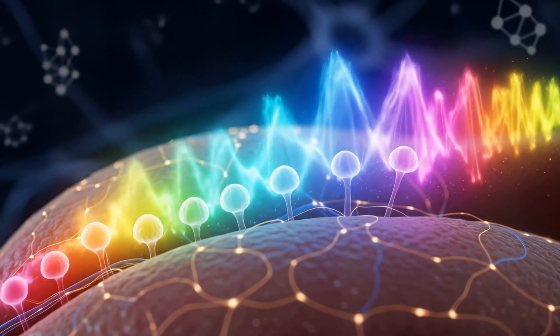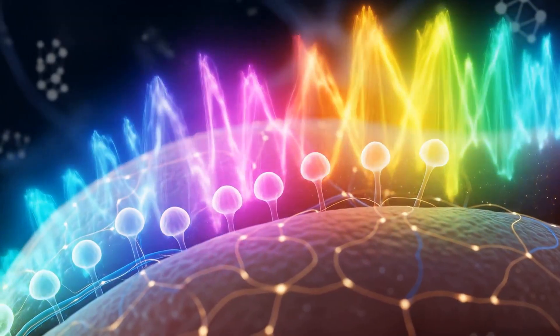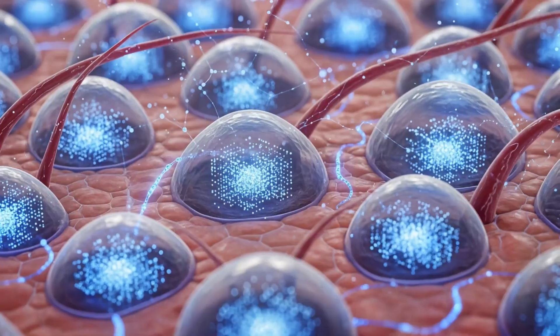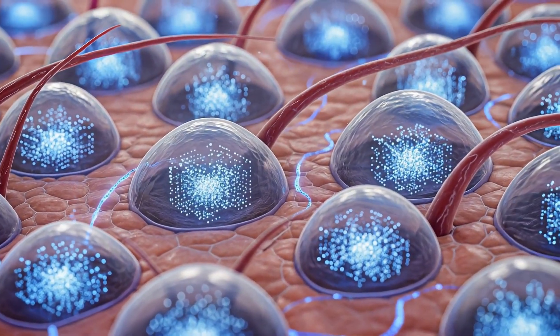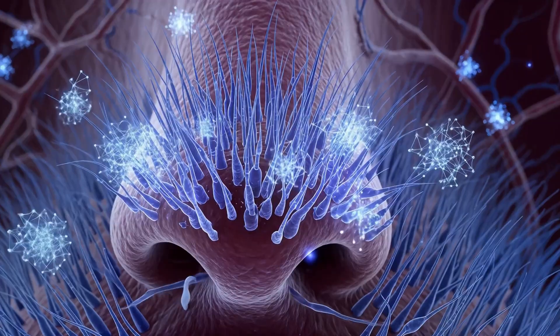When you taste, the vibration patterns of molecules are encoded into the microtubules. The holographic interference collapses into flavor. When you touch, pressure and texture are written into cubit alignments that your microtubules register as sensation. When you smell, the angular frequencies of molecules imprint directly and you experience scent.